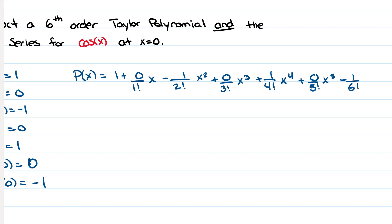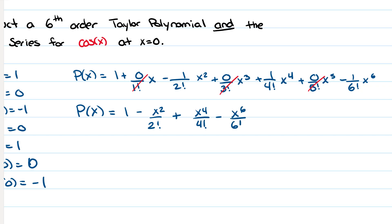Now I get rid of all the zero terms. Rewriting with the non-zero terms: 1 − x²/2! + x⁴/4! − x⁶/6!. That's the sixth order polynomial written with four terms, since the highest power is x⁶.